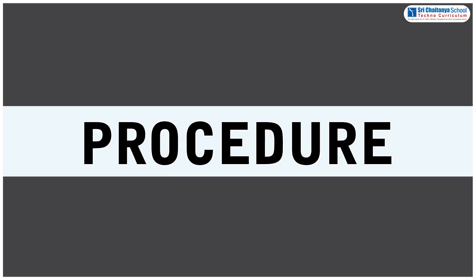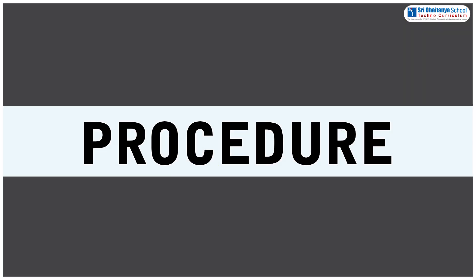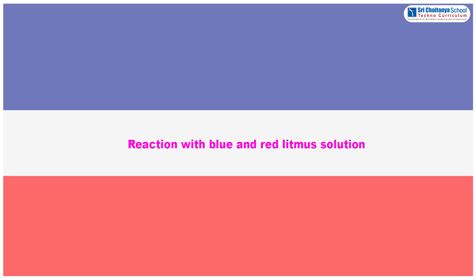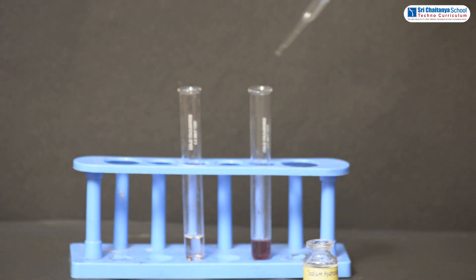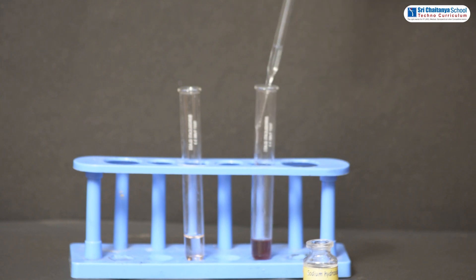Now it is time to see the procedure. Reaction with blue and red litmus solution: Take small amount of red and blue litmus separately. Now add NaOH solution to each with the help of droppers.